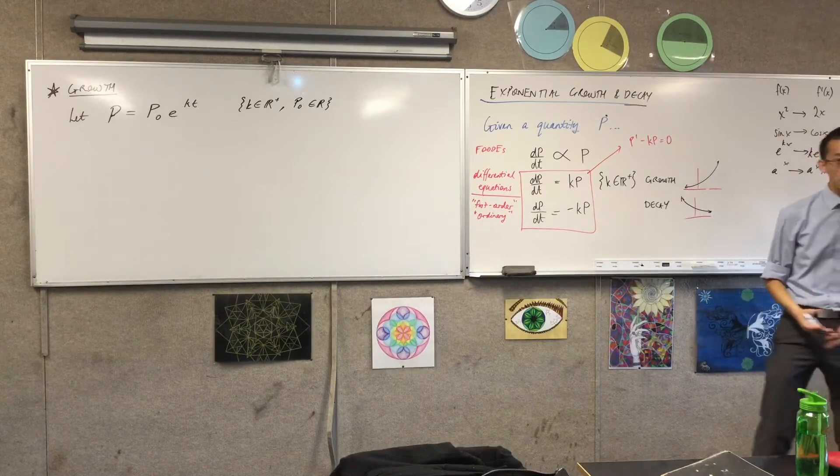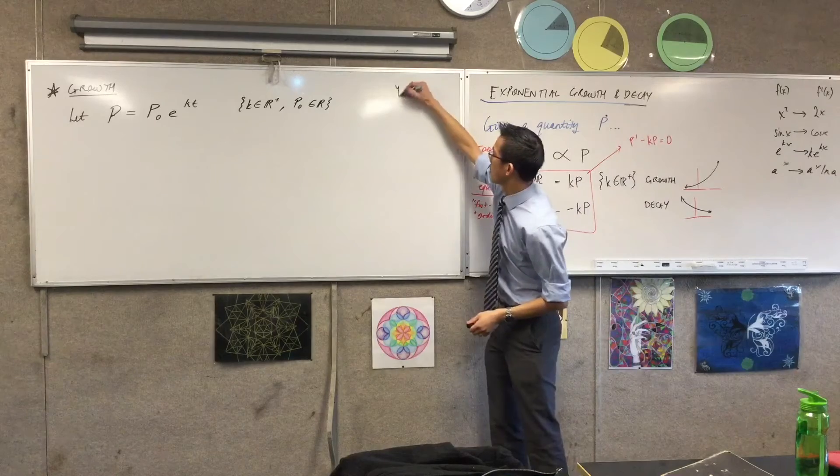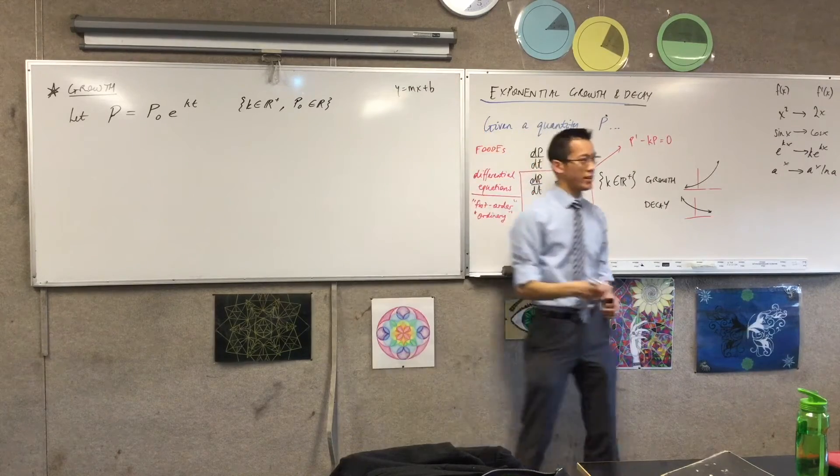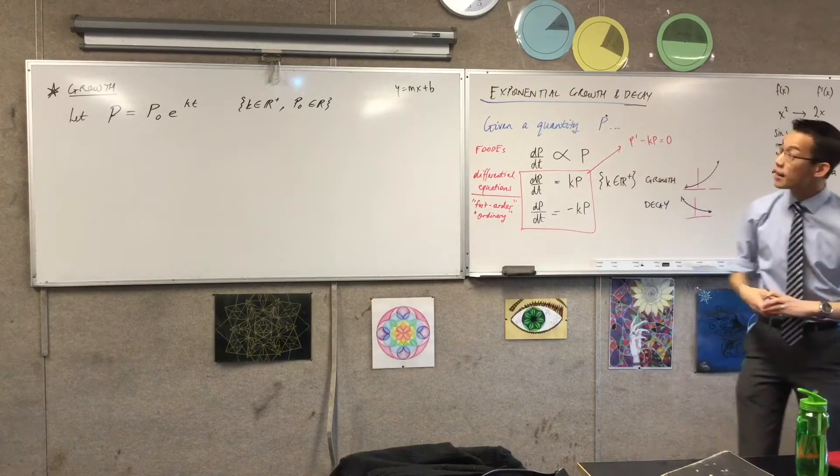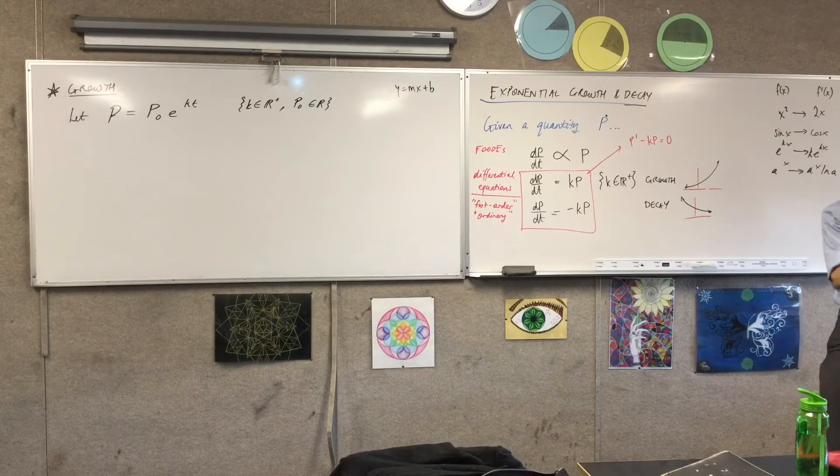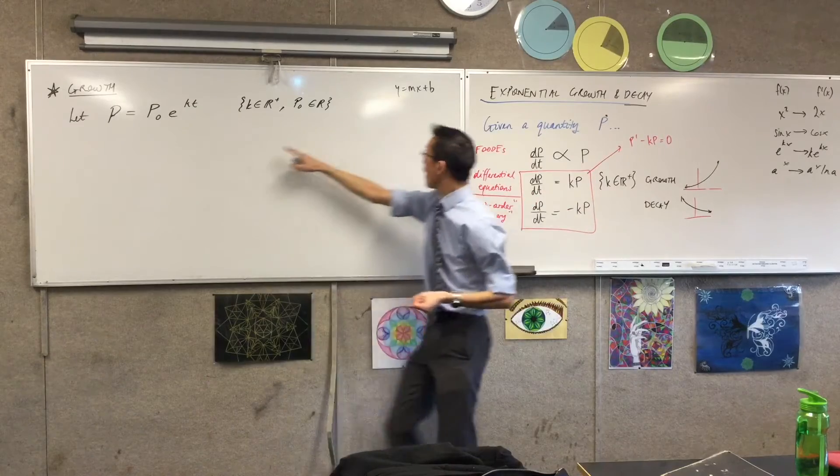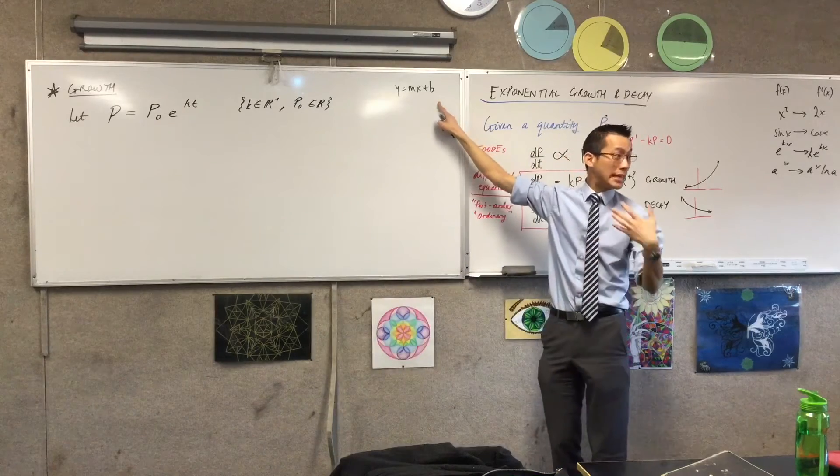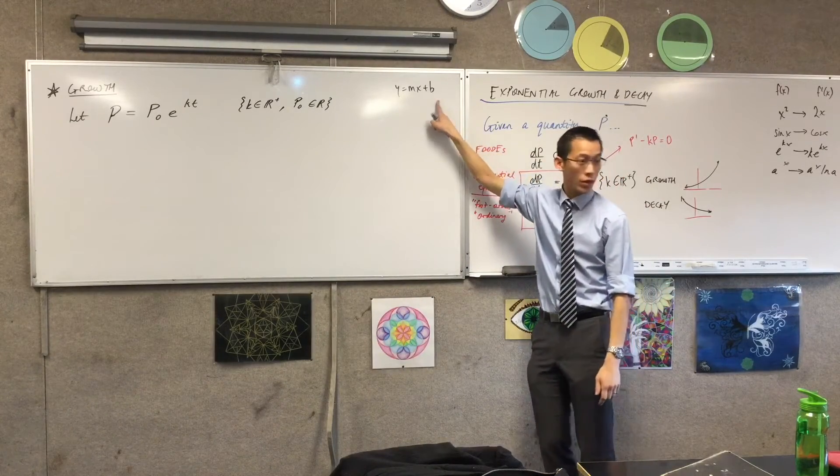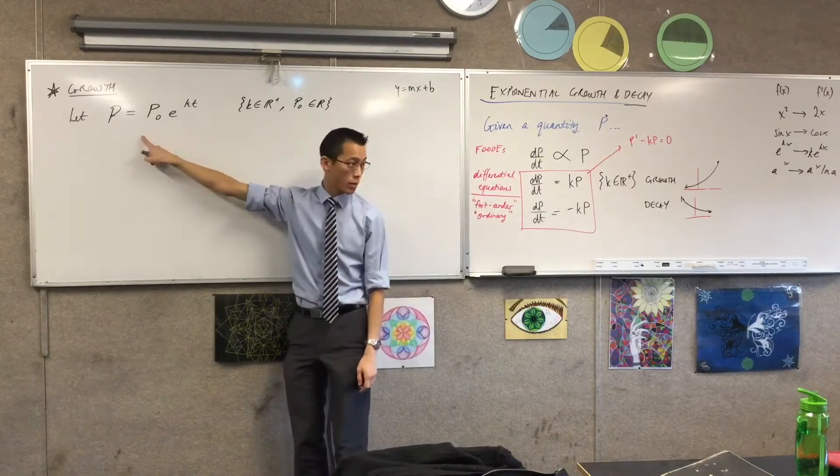So it defines how quickly things are going. And then you've got this guy, P0, which defines not how fast you're going, but where you start. If you want to think about it like a linear function, a linear function can be unambiguously defined by its rate, which is how fast it's growing. It's kind of like this guy. And its y-intercept, where it begins, when x equals 0, what are you equal to? And that's what this corresponds to.